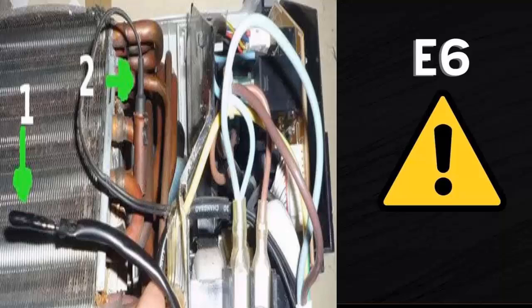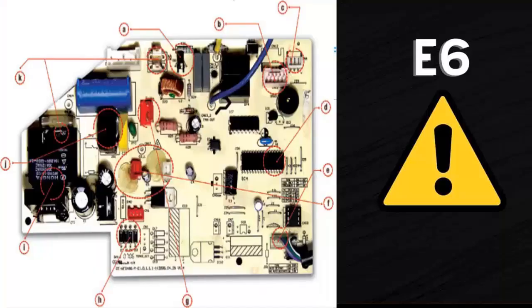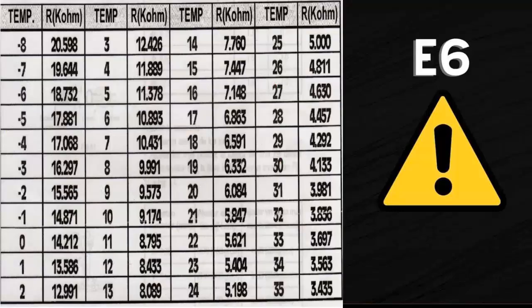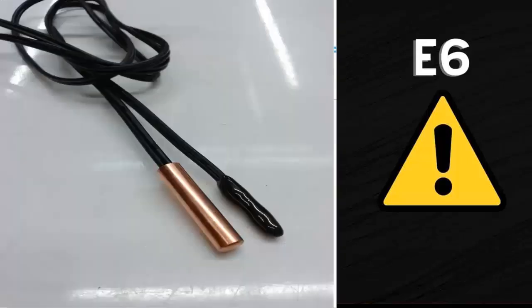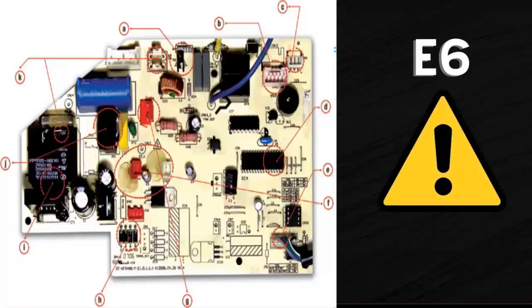The temperature sensor is an electrical resistance that receives electrical current from the control card or board. The electrical resistance of the sensor changes when the temperature changes, causing a voltage change in the electrical current supplied by the electronic card. This voltage change is detected by the card or electronic board, which uses this information to adjust the cooling or heating power.